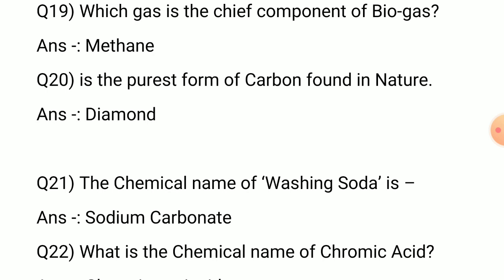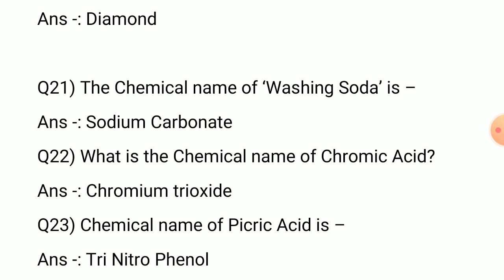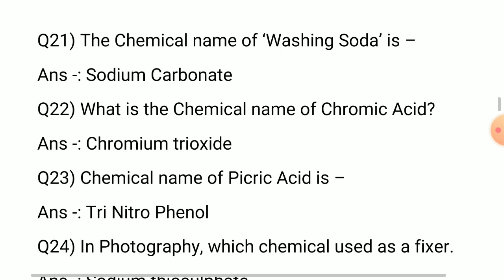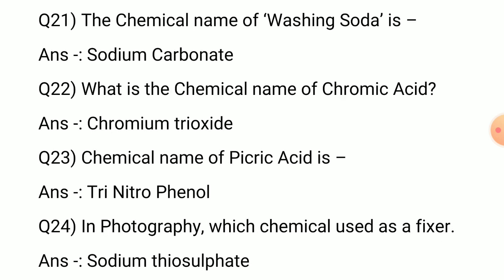Question number 19: Which gas is the chief component of biogas? Answer: Methane. Question number 20: What is the purest form of carbon found in nature? Answer: Diamond. Question number 21: The chemical name of washing soda is? Answer: Sodium carbonate.